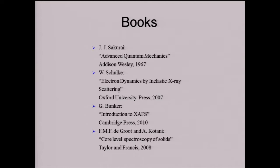There's some literature. Robin showed a couple of books this morning. Here I show my preferences. X-ray interaction with matter is still very nicely done in the old book by Sakurai. Then there's Winfried Schülke, one of the godfathers of photon-in, photon-out spectroscopy — a wonderful book. For X-ray absorption spectroscopy and XANES, there's a recent book by Grant Bunker at IIT Chicago, a very nice introduction to X-ray absorption fine structure. And there's another book on L-edges in 3D transition metals by Frank de Roth and Akio Kotani, covering LH spectroscopy and photoelectron spectroscopy in solid-state systems.